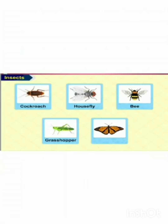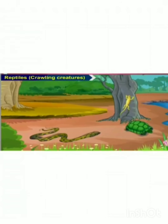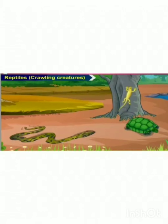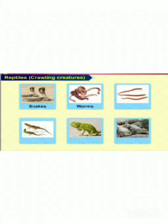Reptiles. Reptiles are crawling creatures. The reptiles crawl on the ground. Some have short legs while some have none. They are cold-blooded creatures. Snakes, worms, earthworms, lizards, chameleons and crocodiles are some of the reptiles.